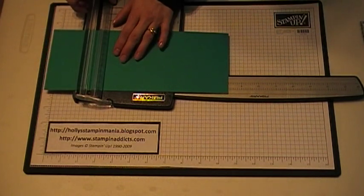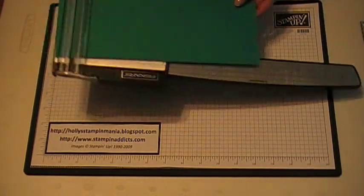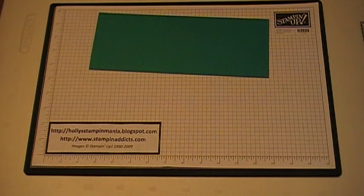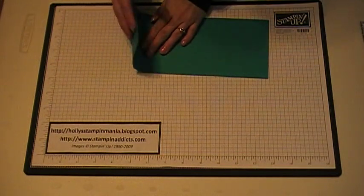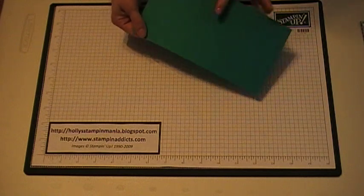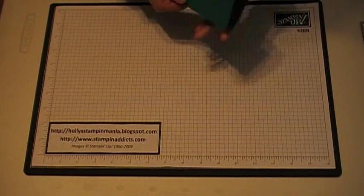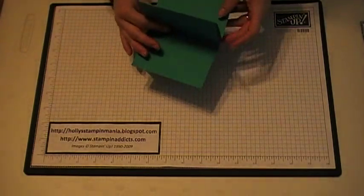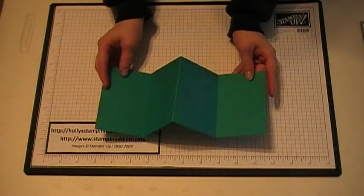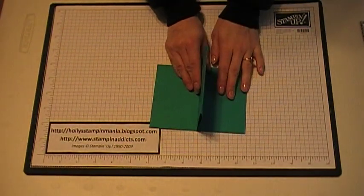And then fold under the scored lines, and you want to create this fold so it's facing up.